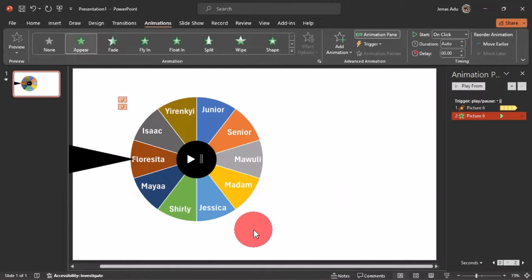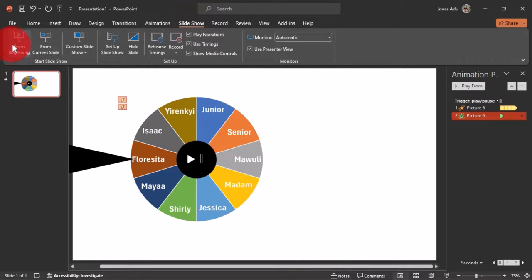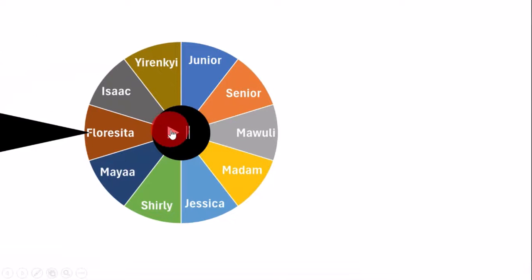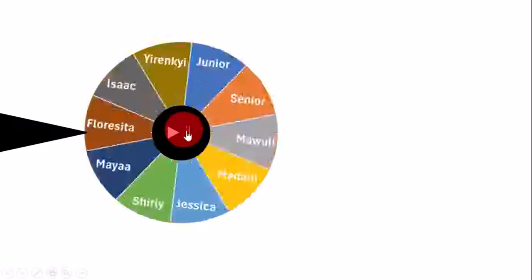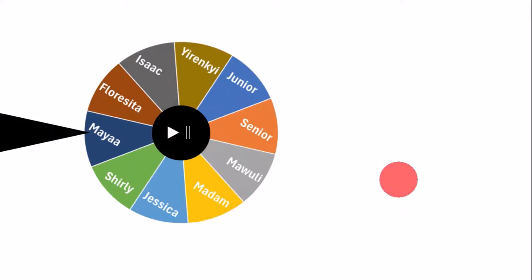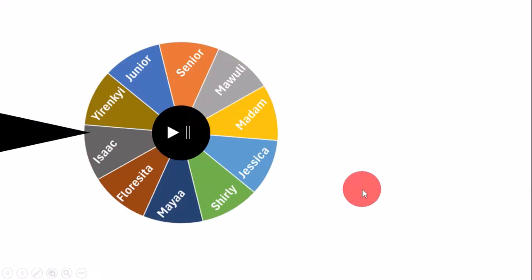Let's move to the slideshow to see how this works. Go to Slideshow on the menu bar and choose From Beginning. When I click the play/pause button, the pie chart starts spinning and the names shuffle. Clicking again pauses the spin and a name is selected — that individual can be given a task. Clicking once more resumes spinning, and another name is selected. The spinning wheel is now fully functional.